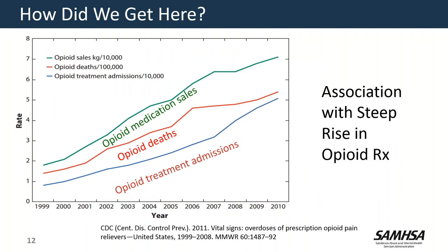So how did we get here? The important thing to understand is that the gradual increase in opioid deaths and therefore opioid treatment admissions have really paralleled the increase in opioid medication sales and prescribing. The increase in prescribing of opioids — typically for pain and chronic pain, especially longer-acting opioids — has been associated with an increase in deaths. In fact, if I were to ask my patients coming in what percentage started with oral opioids as opposed to starting with heroin, across the United States at this point, the good majority of people are actually starting with oral opioids as opposed to heroin.